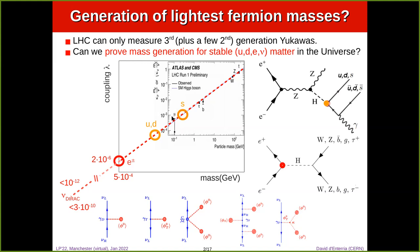We have all those Yukawa couplings by which these fermions get their masses in principle through coupling to the Higgs field, but they are not accessible at the LHC. The truth is that in 15 years, when we close the LHC, we won't have any actual confirmation that the stable matter of the universe gets its mass through the Higgs mechanism. And of course there is the big elephant in the room of how neutrinos get their masses — whether they are Dirac particles with a tiny coupling, or whether there are other mechanisms with heavy right-handed neutrinos.